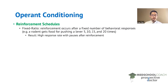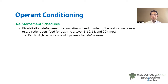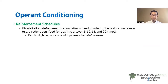The first is fixed ratio. In a fixed ratio reinforcement schedule, the reinforcement occurs after a fixed number of behavioral responses. In this case, a rodent is given the reward — food — for pushing a lever, but not after each lever press. Instead, every five lever presses results in a reward. So when the rodent pushes the lever 5, 10, 15, and 20 times, they get a reward. After 20 lever presses, they get a total of four rewards — one reward after every five lever presses.